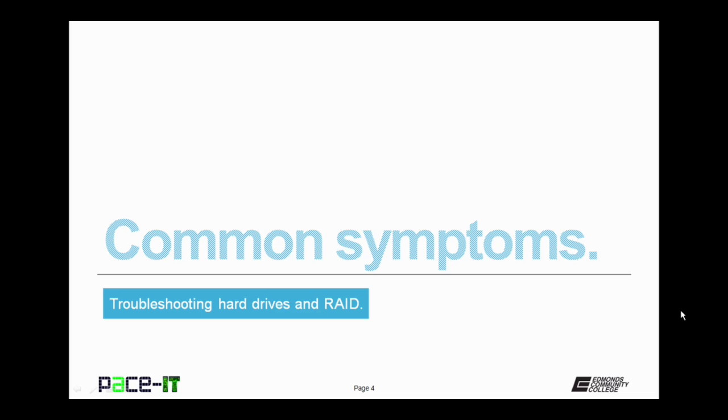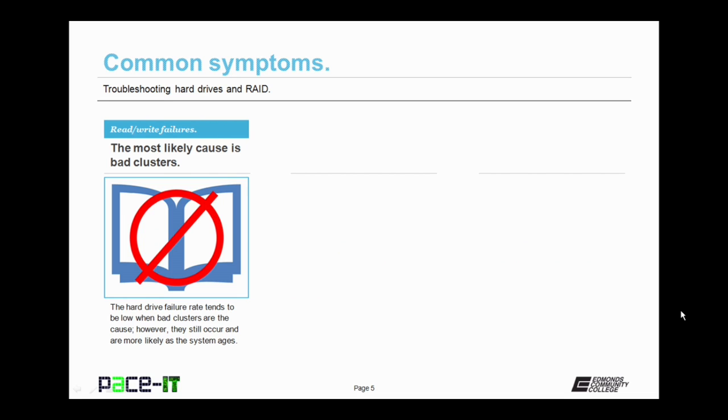We're going to begin by talking about common symptoms of problems. The first one we're going to discuss today is read-write failures. The most likely cause of read-write failures are bad clusters. The failure rate tends to be low for bad clusters, but they do still occur and are much more likely as the system ages. Read-write failures are usually caused by a physical defect on the drive.